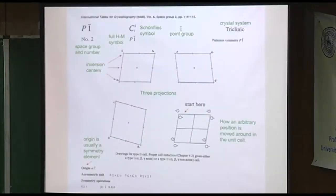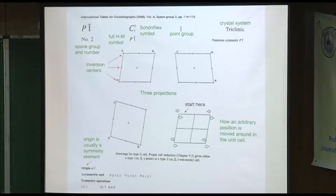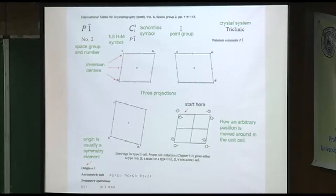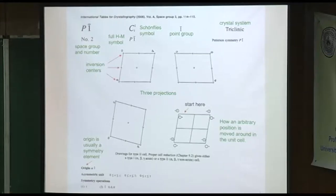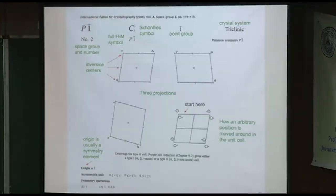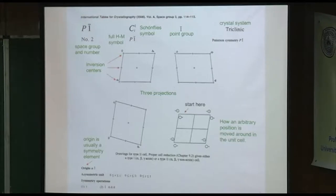Let's look at the tables. This is P1-bar, number two — pretty simple, just triclinic. All the tables have essentially the same organization. The point group is listed up here, and it also gives you the old Schoenflies symbol. Patterson symmetry is given here, which we haven't discussed yet but I'll briefly discuss next week. HM stands for Hermann-Mauguin.